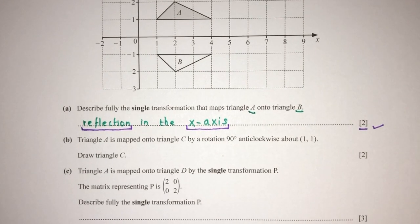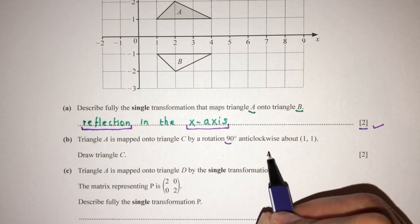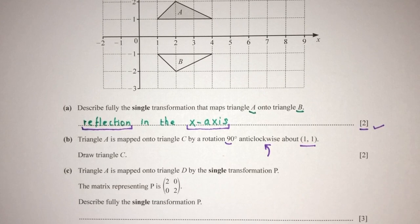Now for part B, triangle A is mapped onto triangle C by a rotation of 90 degrees anticlockwise, which will be in this direction, about point (1,1). Okay, so again we have two ways of solving this question. One is by using the graph directly, and the other way is by calculation.